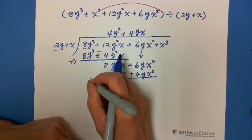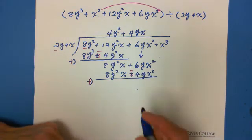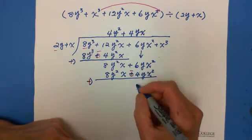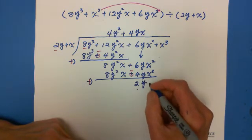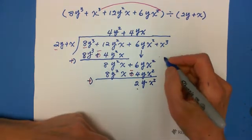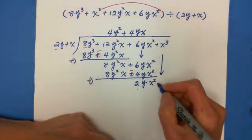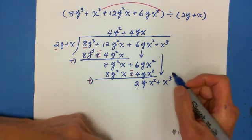Change subtraction to add its opposite. Now we have 6 minus 4 equals 2, so 2y x squared. And carry down the next term, which is plus x cubed.